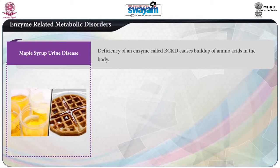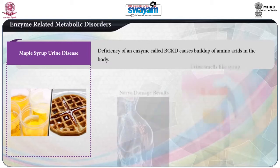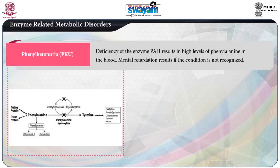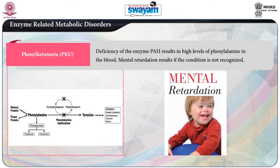The next disorder is maple syrup urine disease. Deficiency of an enzyme called BCKD causes buildup of amino acids in the body, nerve damage results, and the urine smells like maple syrup. Phenylketonuria (PKU) — deficiency of the enzyme PAH results in high levels of phenylalanine in the blood, and mental retardation results if the condition is not recognized.